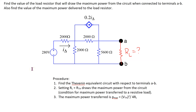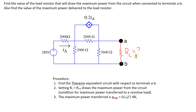In this example, the goal is to find the value of the load resistor connected between terminals A and B that will draw maximum power from this given circuit, and also we need to find the maximum value of this power that is delivered to the load resistor.